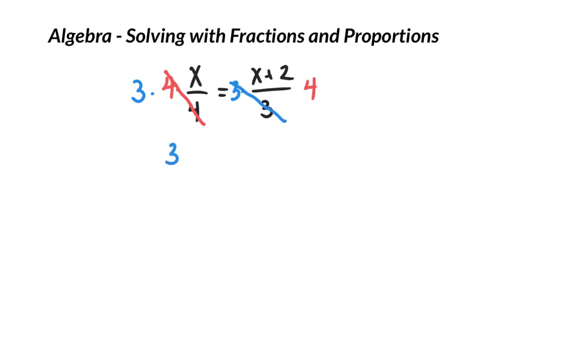So, we end up with 3 times x is equal to, I'm just going to do parentheses because this 4 is going to be applied to both. So, 4x plus 4 times 2 like that. And, again, what that looks like, this is the most common way people talk about, is cross-multiplying.